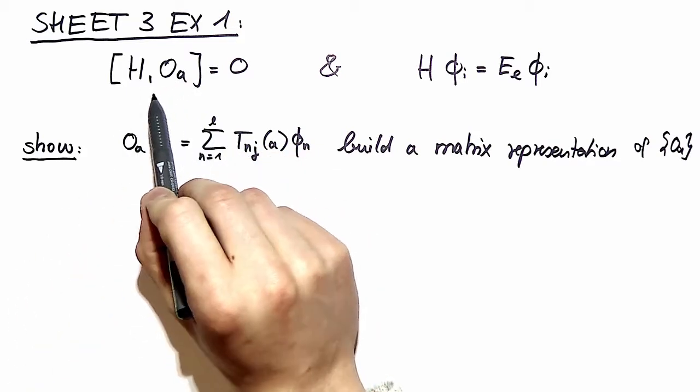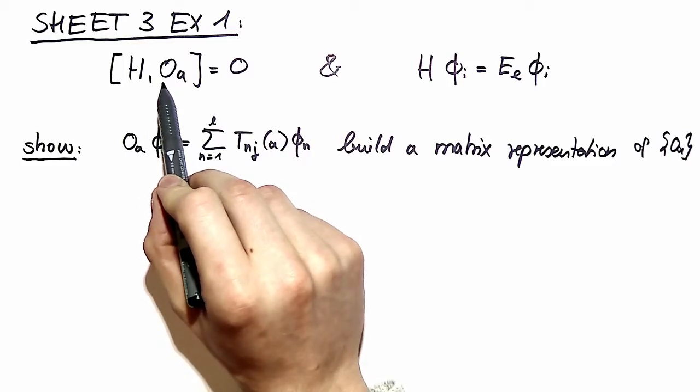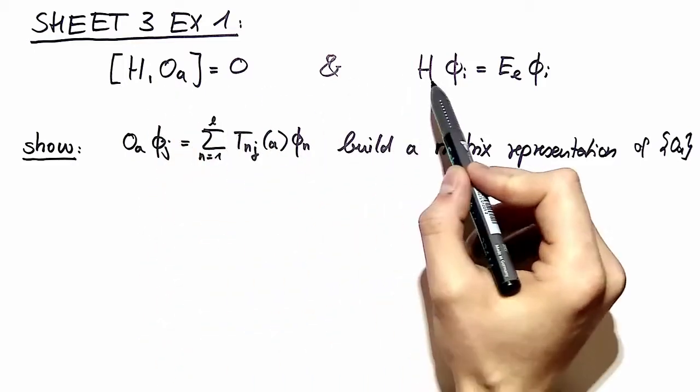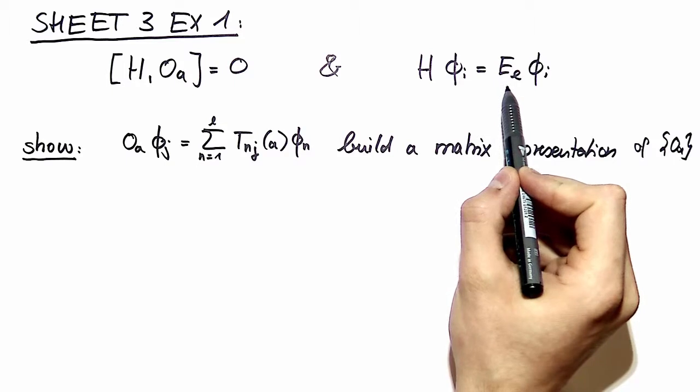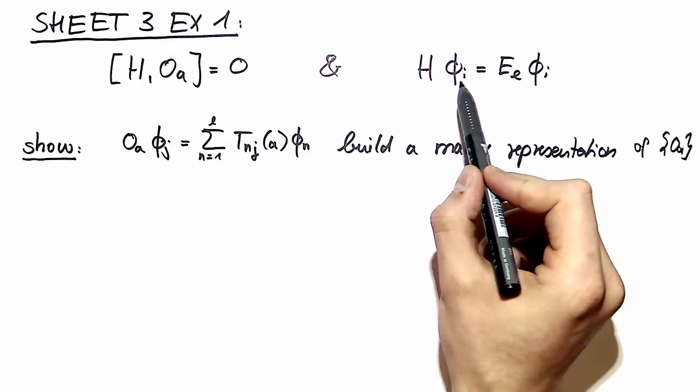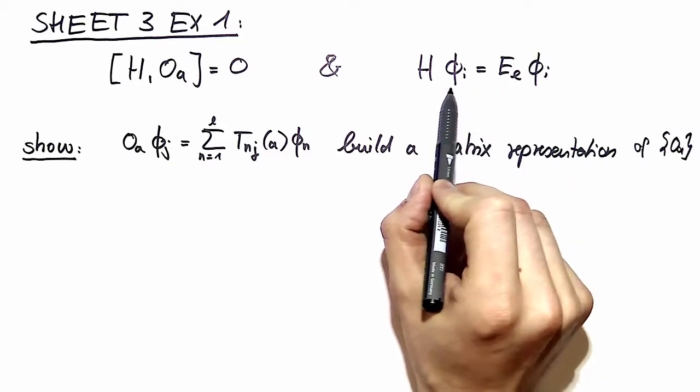The symmetry group of H contains all elements OA which commute with H. And then we have the eigenspace to a fixed eigenvalue EL of phi I, and phi I is L dimensional.